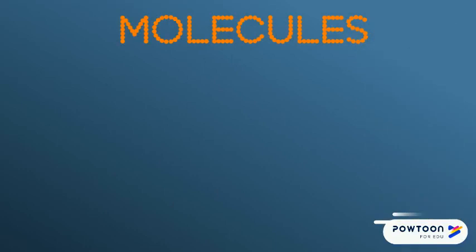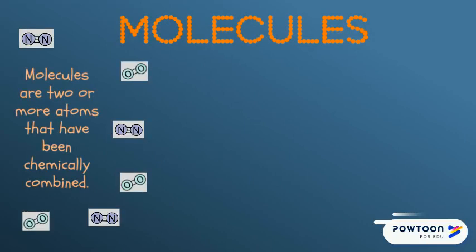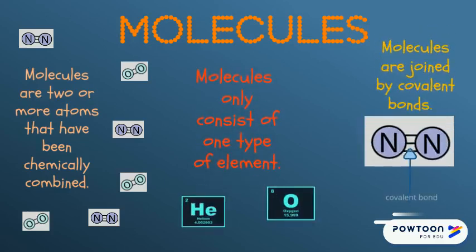Let's take a look at wonderful molecules. Molecules are made when atoms combine. To make a molecule, two or more atoms have to be chemically combined. The molecules can only consist of one type of atom, and they are joined by covalent bonds.